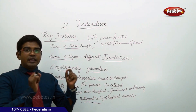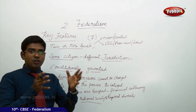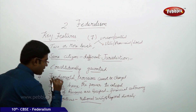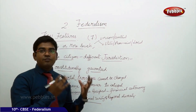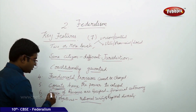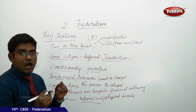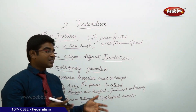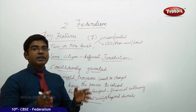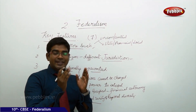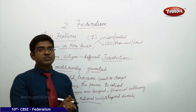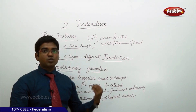Only then can any provision regarding the federal structure be modified or changed. The fifth important feature is that courts always have the power to interpret any kind of laws made either by the union government or by the state government. The sixth feature is that sources of revenue are clearly specified, giving governments financial autonomy. This financial autonomy makes them independent rather than interdependent — the state government is not dependent on the union government.